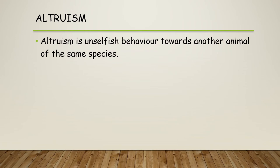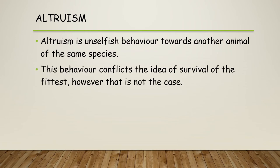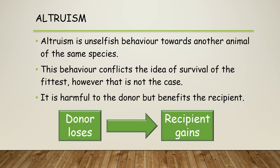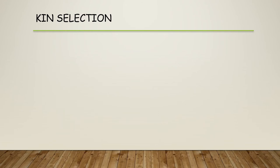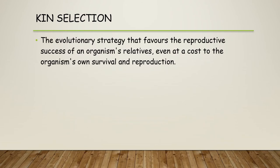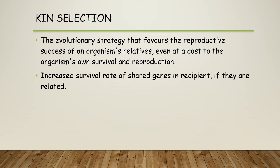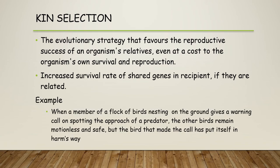Another example of social defence is altruism — an unselfish behaviour towards an animal of the same species. It's sometimes seen as conflicting with survival of the fittest, but that's not the case. It's harmful to the donor but benefits the recipient, and it's often seen together with the idea of kin selection — an evolutionary strategy that favours the reproductive success of an organism's relatives even at the cost of the individual's own survival. This means an increased survival rate of shared genes when the animals are related.